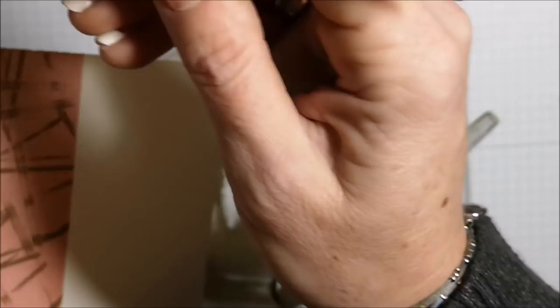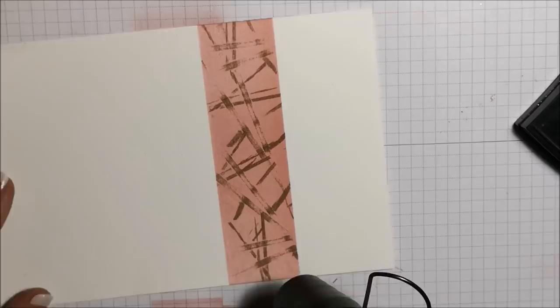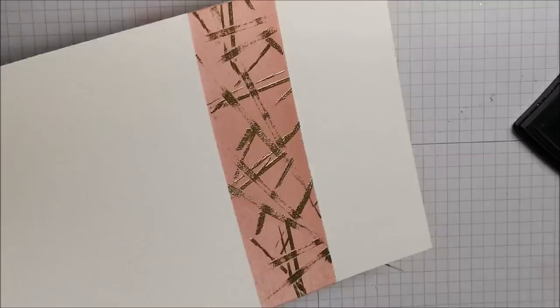And because I didn't use my embossing buddy on the white, I do have some powder where I don't want it. So I'm just taking a paintbrush and wiping that off. Okay. I'm going to set this with my heat tool.